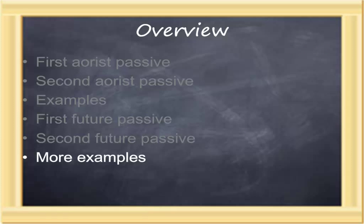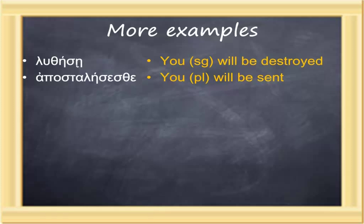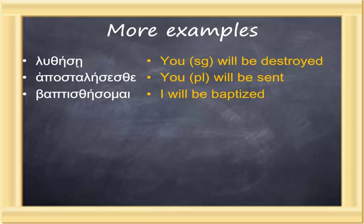We conclude this lesson by looking at examples of future passive forms. Please note that I will branch beyond the paradigms and use some of the stems laid out in the section called Previous Words on pages 219 to 221. Luthēsē: second person singular, future passive from luō — you singular will be destroyed. Apostalēsesthe: second person plural, future passive from apostellō — you plural will be sent. Baptisthēsomai: first person singular, future passive of baptizō — I will be baptized.